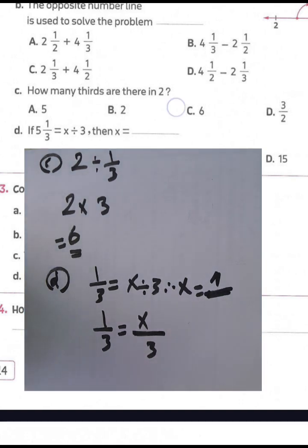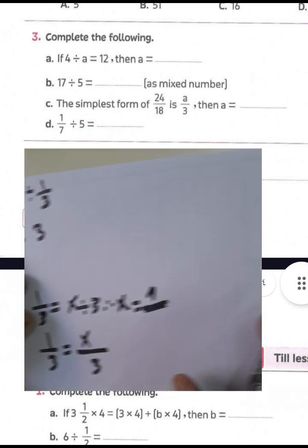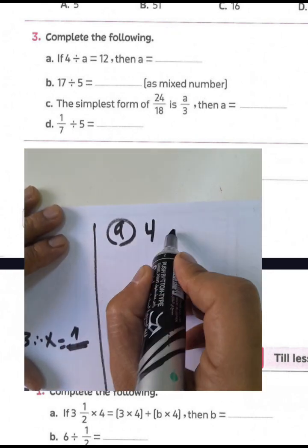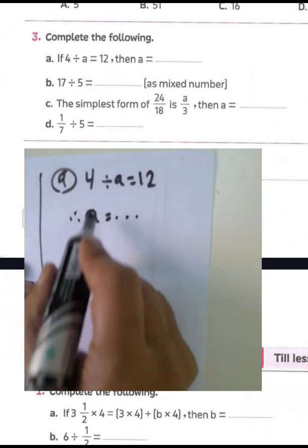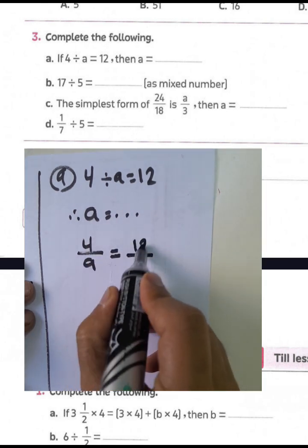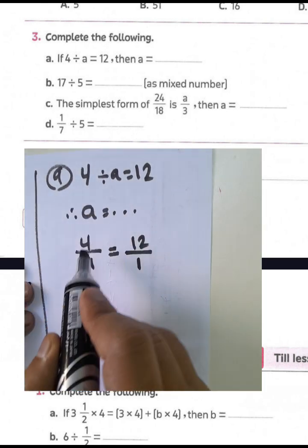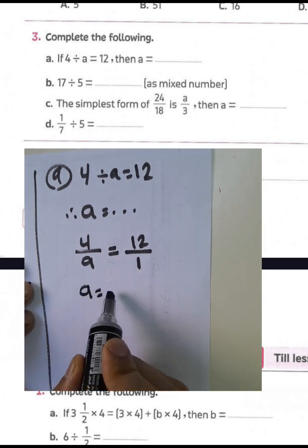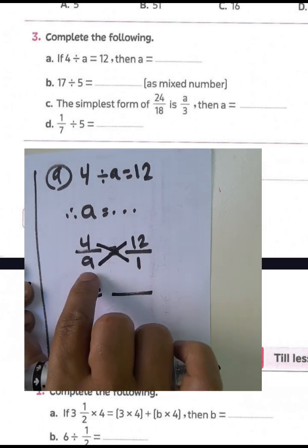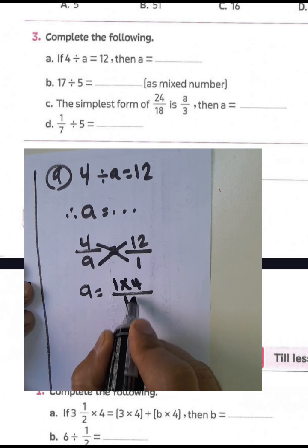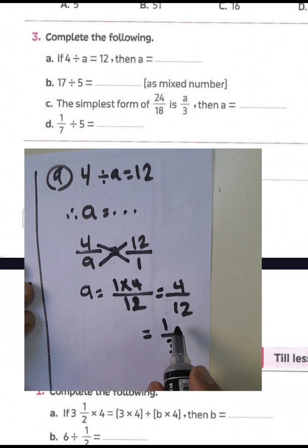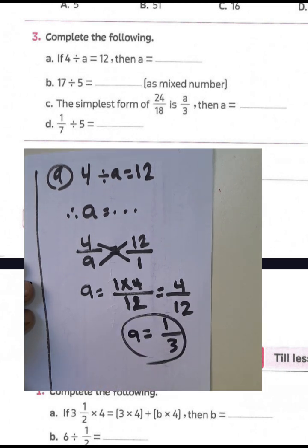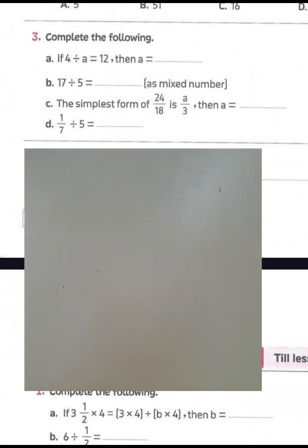Question number 3, letter E: if four divided by e equals twelve, find the value of e. Write four over e equals twelve over one, then apply the rule — product of extremes equals product of means: e equals one times four divided by twelve, which is four over twelve. Simplify by dividing by four: four divided by four equals one and twelve divided by four equals three, so e equals one over three.